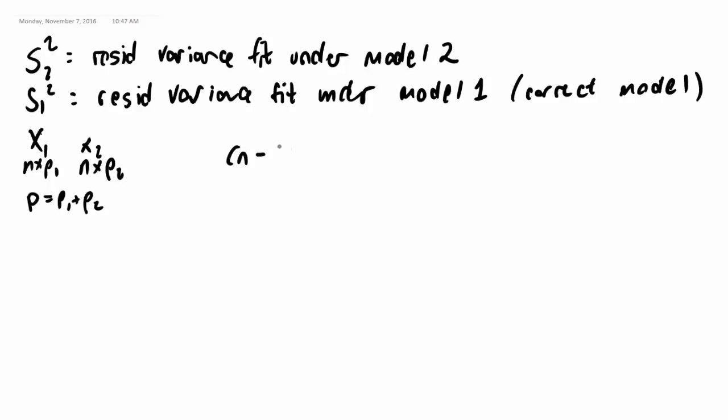So N minus P times S2 squared over sigma squared is going to be chi squared N minus P. And then also because it is the correct model, N minus P1 times S1 squared over sigma squared is also going to be chi squared N minus P1.